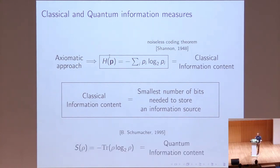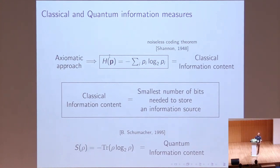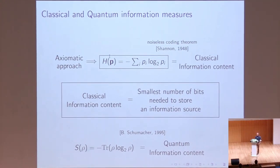In quantum theory, the same result holds for the von Neumann entropy, as proved by Benjamin Schumacher in 1995, who showed in particular that the von Neumann entropy is equal to the quantum information content where qubits replace the bits.